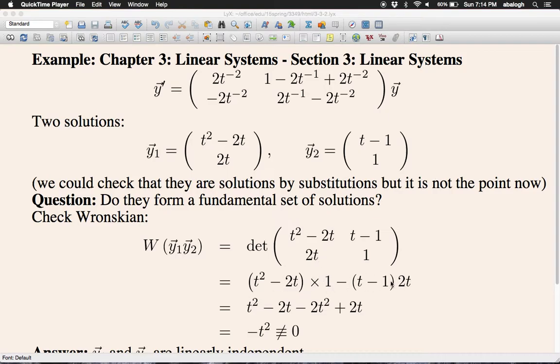Then we have to expand these products and do the simplification. Simplify as much as we can and we get minus t squared, which is a function of t and clearly this is not always zero.